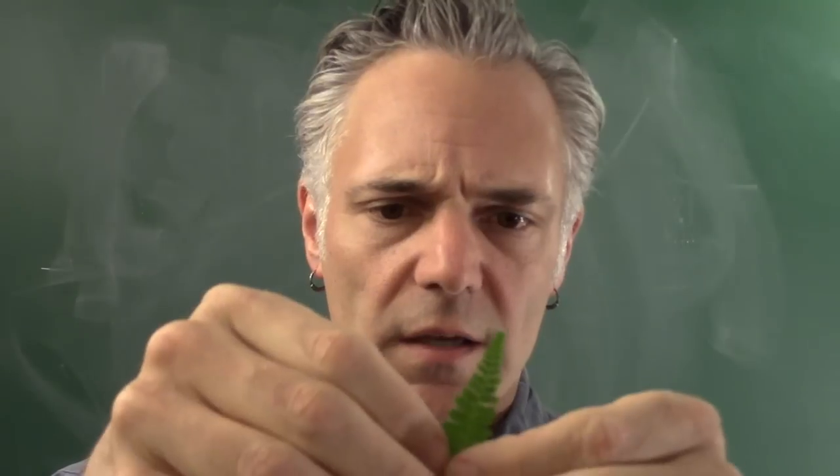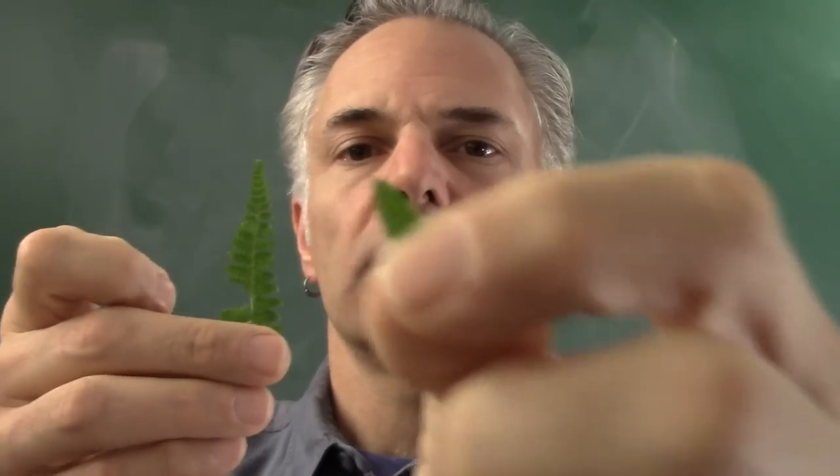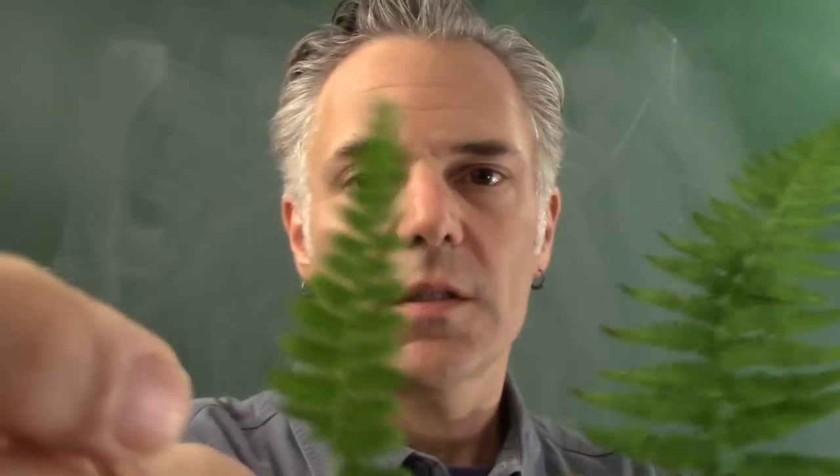And it continues this self-similarity over several scales. Here's part of a fern, and this part of the fern came from this — those hopefully look a little bit similar. And then this looks like this. So fractals are objects that are self-similar; they're made up of smaller copies of themselves, and this self-similarity extends over several scales or several size generations.